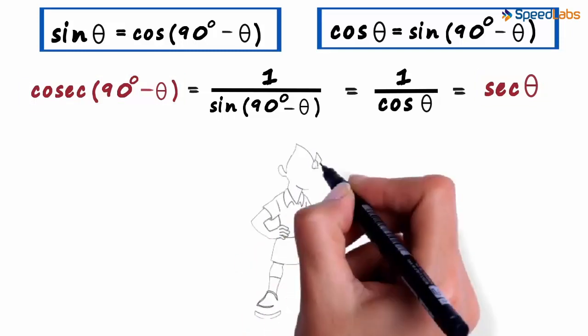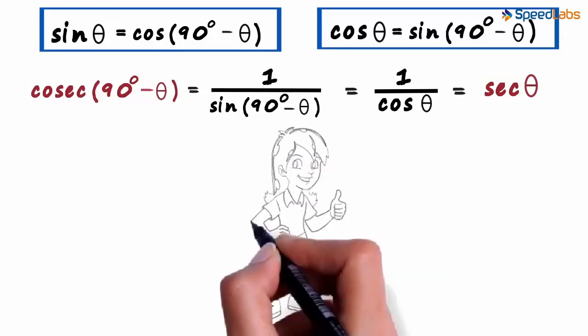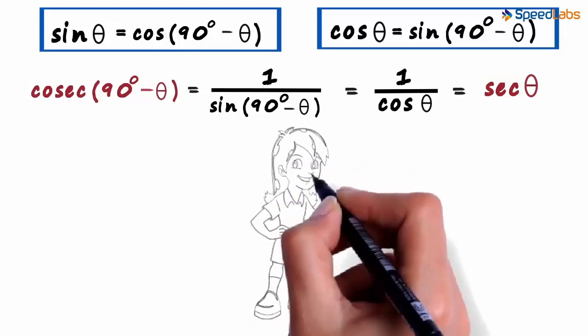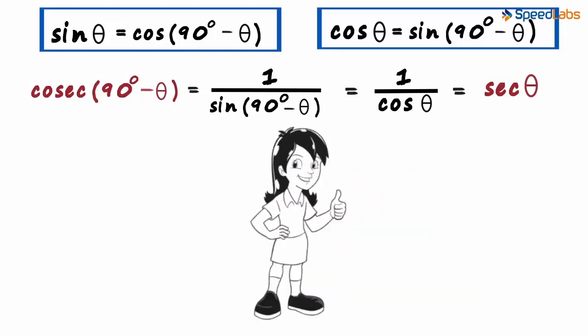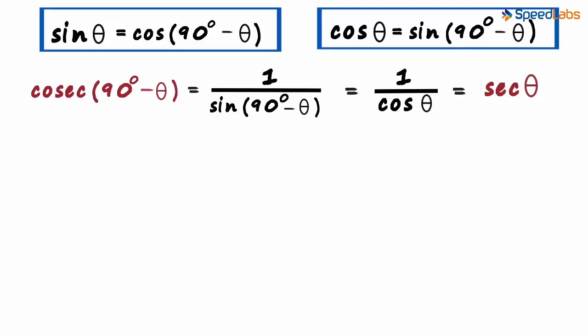As I always say, trigonometry is about deriving relations and not memorizing them. You understand a few relations and derive the rest. On that note, let's derive another relation.